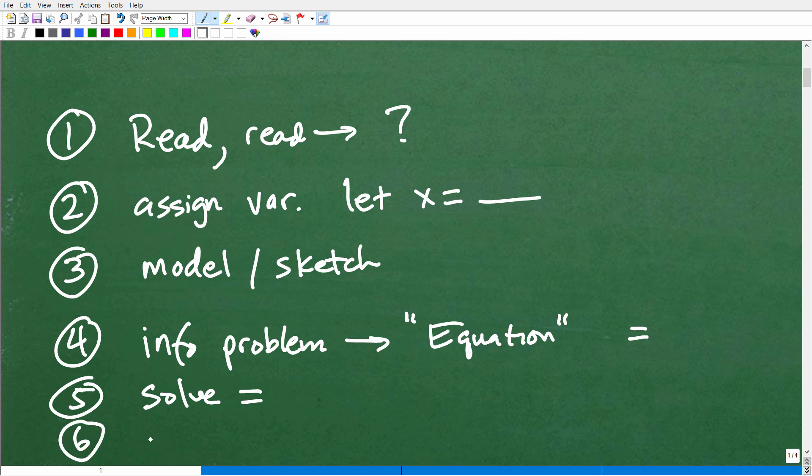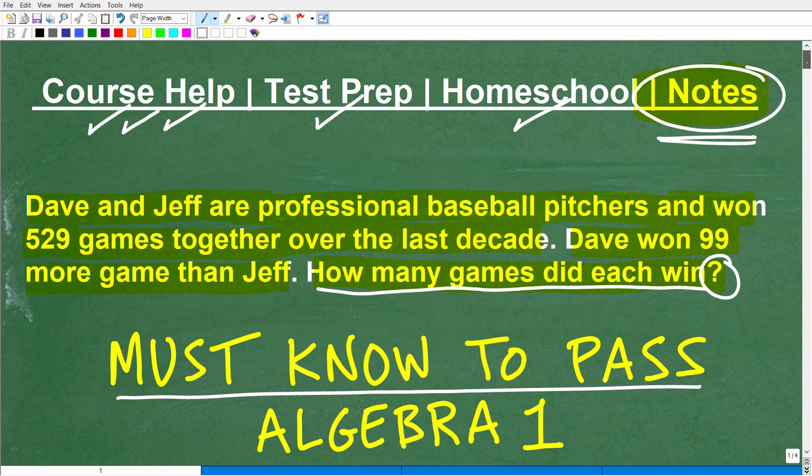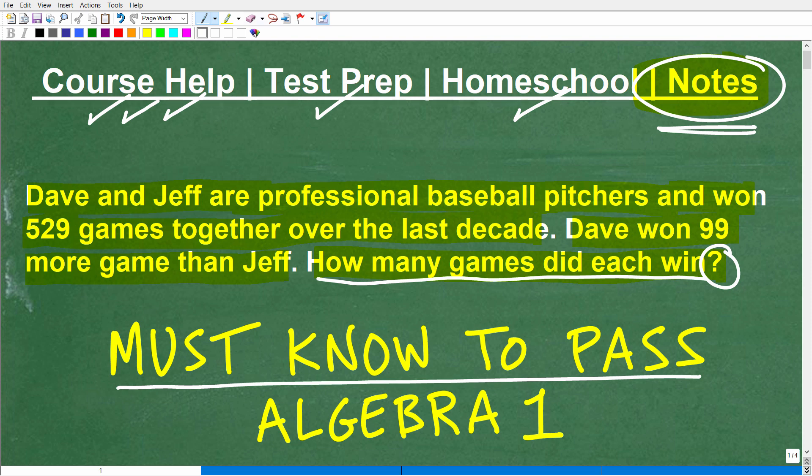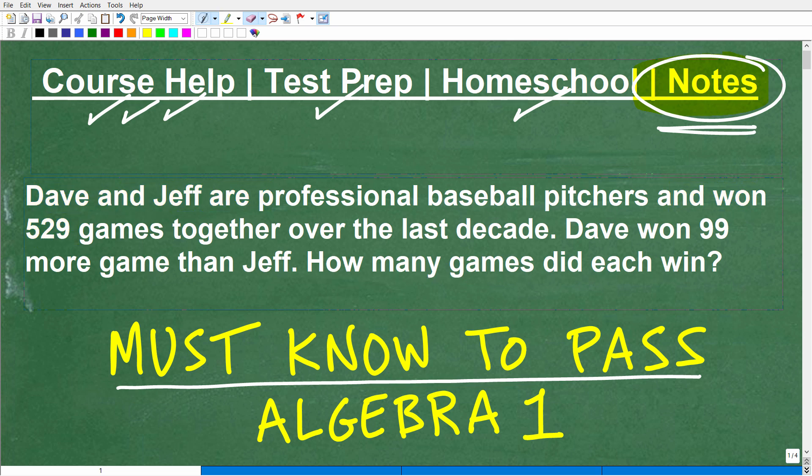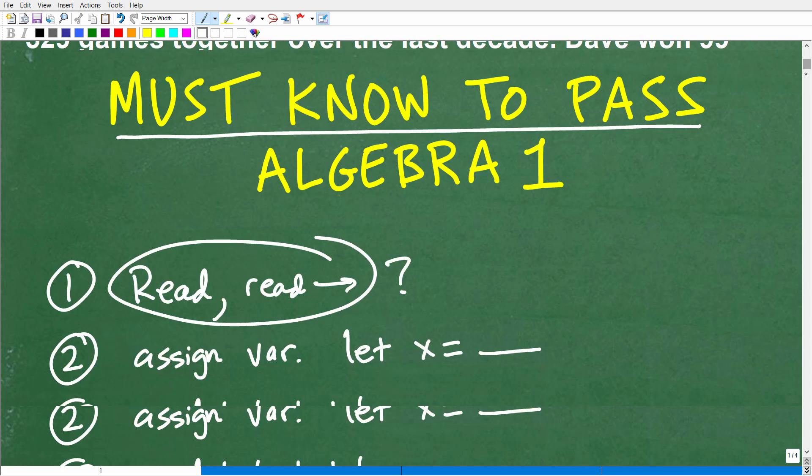And then the last thing you're going to do is you're going to make sure that you answer the question being asked. So sometimes students solve an equation and they're like, okay, I'm done, and they just give the teacher the answer. Well, sometimes you have to take that solution to that equation and do a few additional things in order to actually answer the question or questions the actual word prompt is asking. All right, so if you want to write this down real quick and use it as a guideline, I will show you the problem one more time so you can maybe take one last shot at doing this yourself.